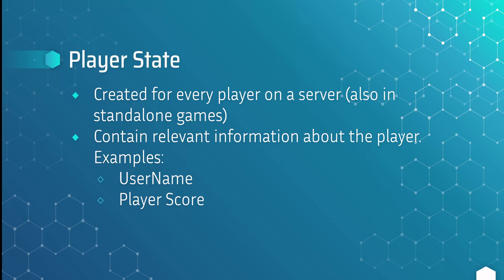There are two more classes specific to networking or multiplayer games — though that's not to say you couldn't use them in single player, it would just be redundant in most cases. The first is the Player State. A player state is created for every player on the server, and technically in standalone games as well. It contains relevant information about that player that can be used by other players or the server — for example, the username or that player's score could be referenced through the player state.